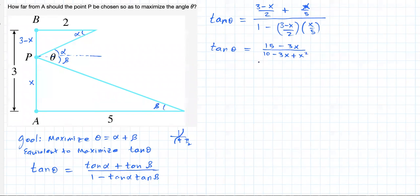So now, in order to maximize this, I'm going to take the derivative and set it equal to 0. That way, I will find the critical values. Derivative of this quotient, using the quotient rule, should be derivative of the numerator, negative 3, times the denominator minus the derivative of the denominator, minus 3 plus 2x, times the function on the numerator, 15 minus 3x, all over 10 minus 3x plus x squared, all squared. That derivative should be set to be equal to 0.